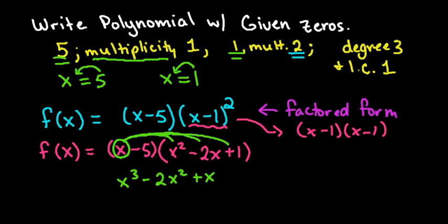And then I would do the same thing with the other values. So I would take the negative 5 and I would also distribute it to everything. So I would do negative 5 times x squared, which would give me negative 5x squared. Negative 5 times negative 2 gives me positive 10x. And then negative 5 times 1 would give me negative 5.